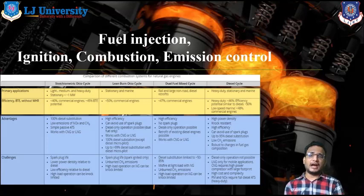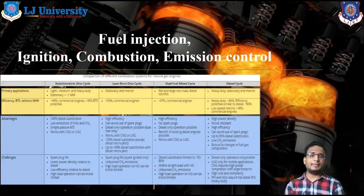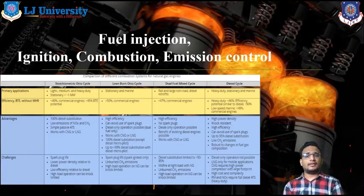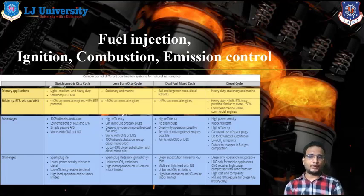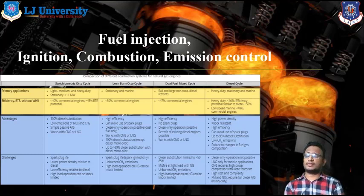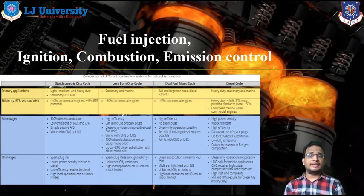Regarding brake thermal efficiency across the auto-cycle, lean-burn auto-cycle, diesel fuel cycles, and diesel cycles: ranging from 40% to 50%. Ultimately, we can say that natural gas engine cycles can achieve up to 50% brake thermal efficiency without waste heat recovery (WHR). The advantages and challenges of stoichiometric auto-cycles, lean-burn cycles, and dual fuel mix cycles are also mentioned here.